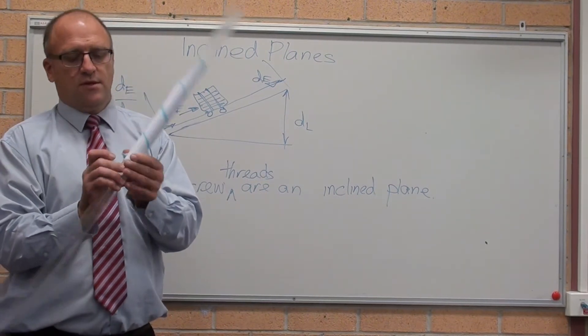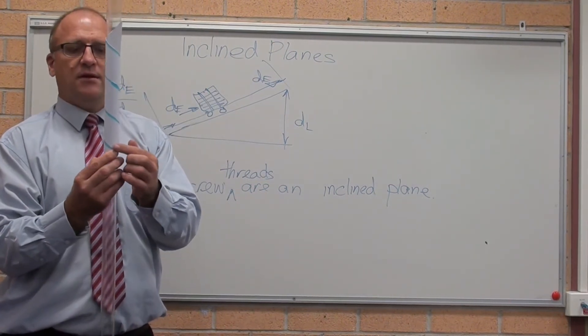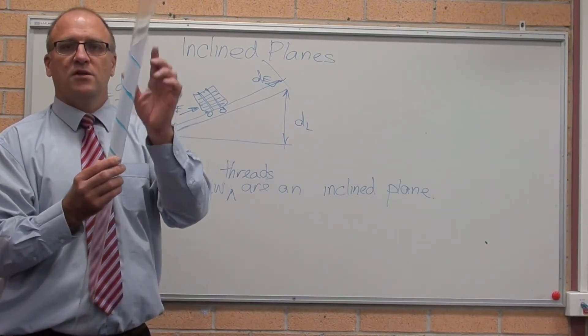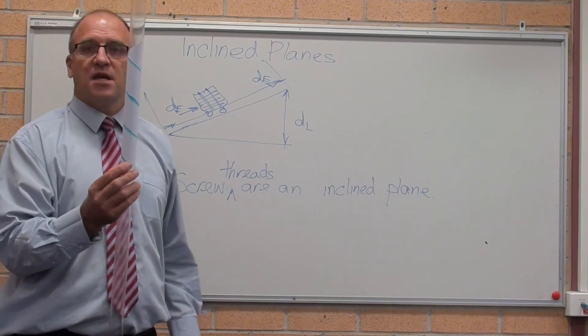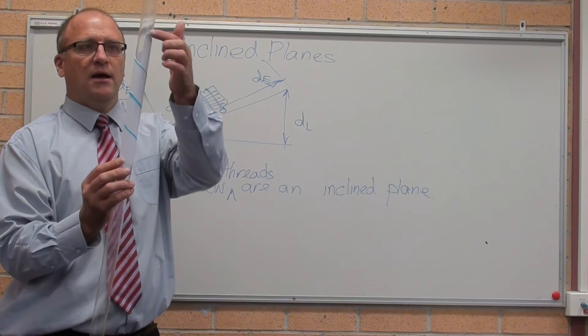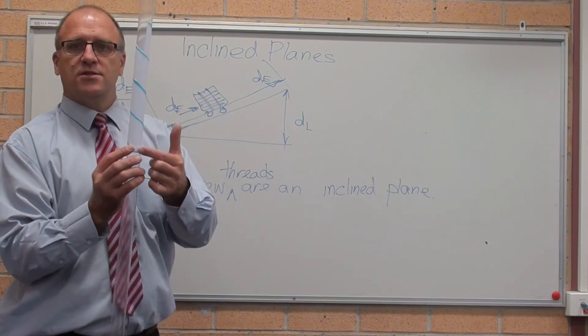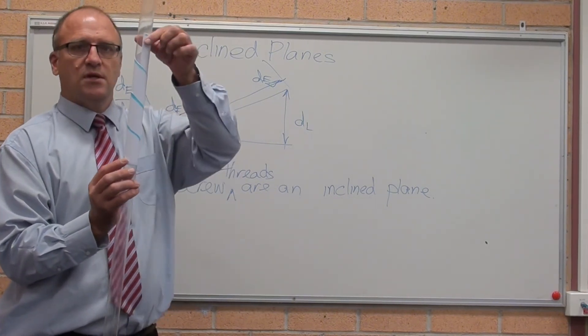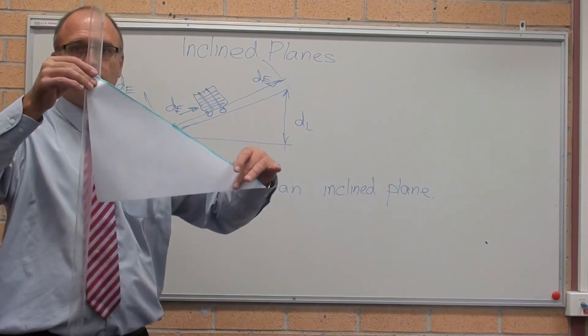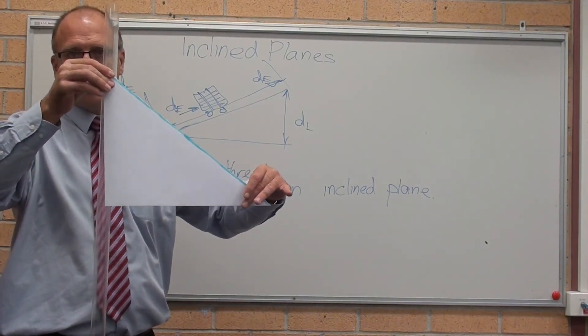So the distance moved by the effort is still the same. Just pi times diameter times how many turns now, because it's a round tube. The distance moved by the load is still the same, so a screw thread is an inclined plane.